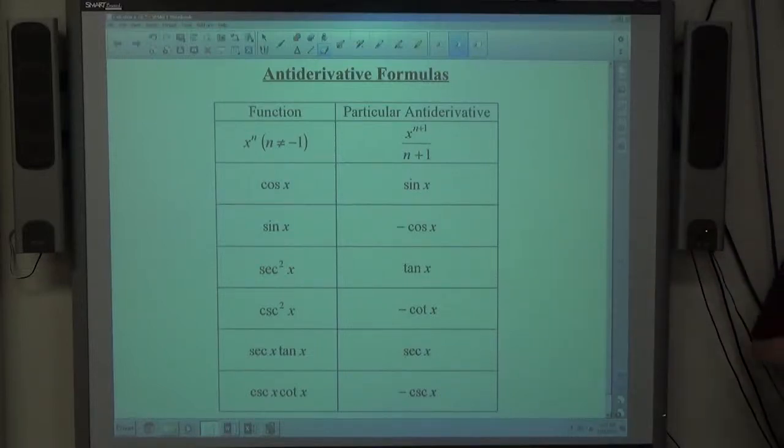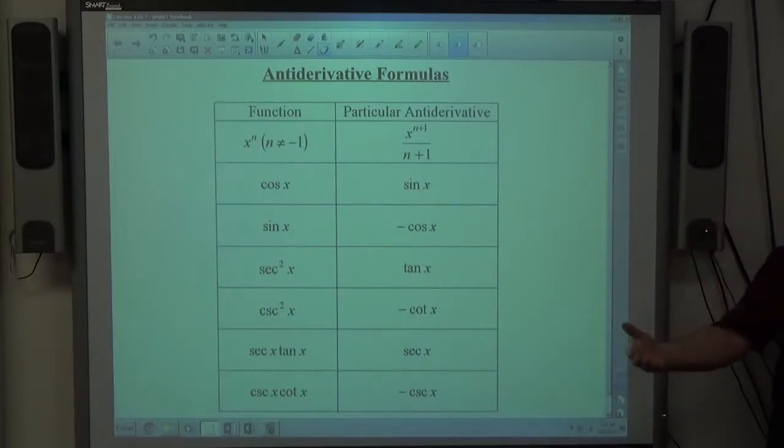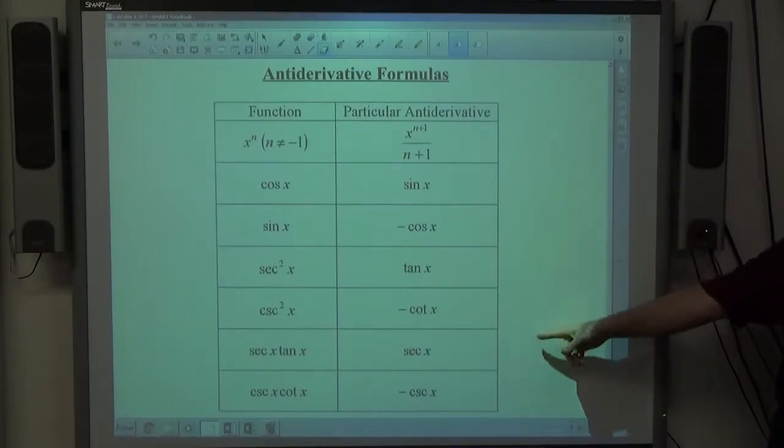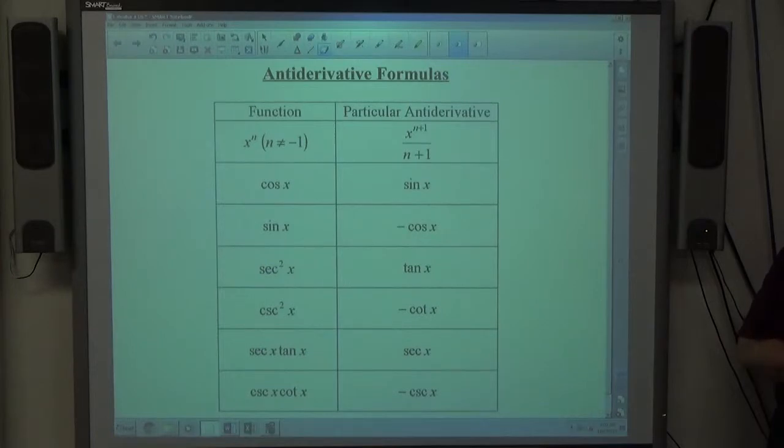Chapter 4.10 is about anti-differentiation, and what that means is we're going to start at a derivative and go back to the function that created it. These are your formulas for anti-derivatives, and there's not a whole lot to them.